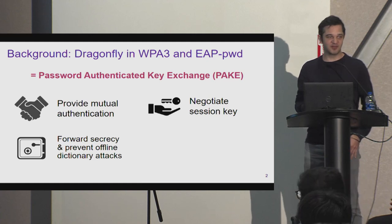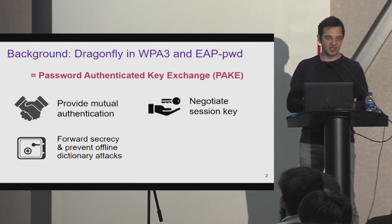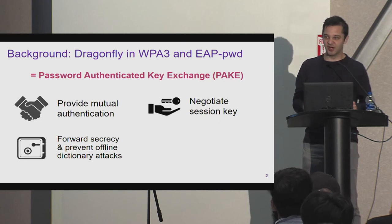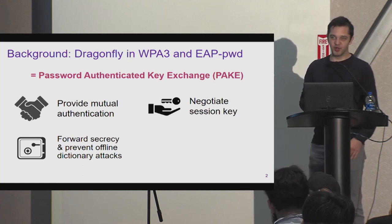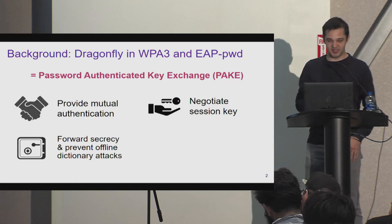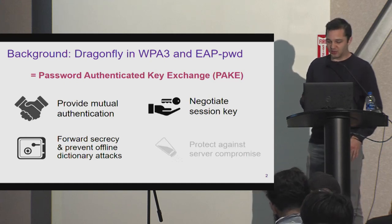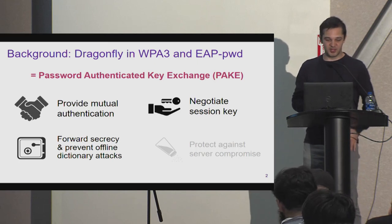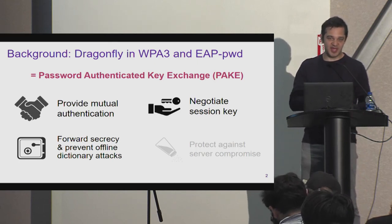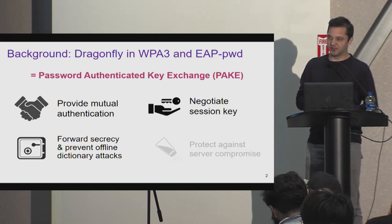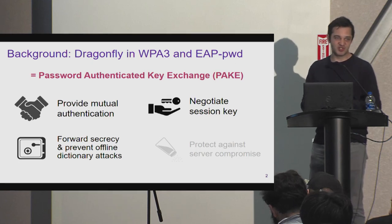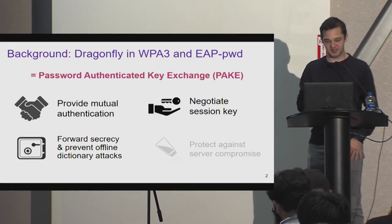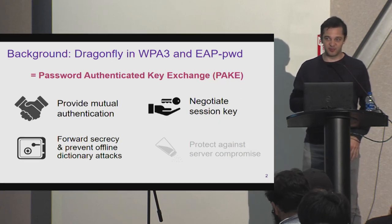An interesting property that Dragonfly and many other PAKEs provide is forward secrecy and protection against dictionary attacks — a huge advantage compared to WPA2. With WPA2, an adversary can passively capture a handshake and perform dictionary or brute force attacks offline. Unfortunately, Dragonfly does not protect against server compromise: if an attacker compromises the access point or router, they have enough information to impersonate a client.